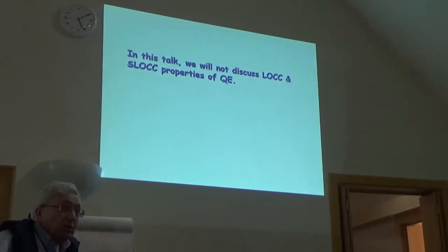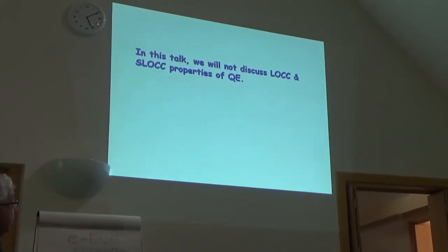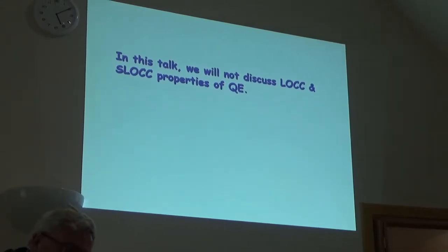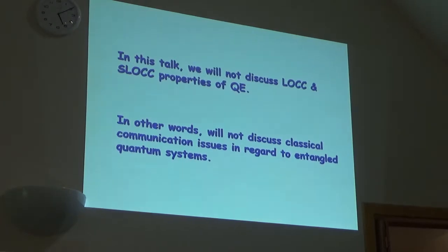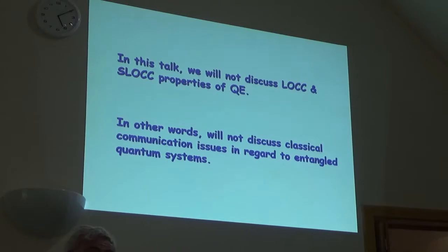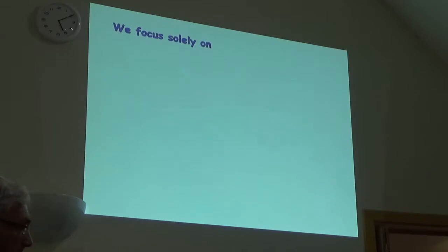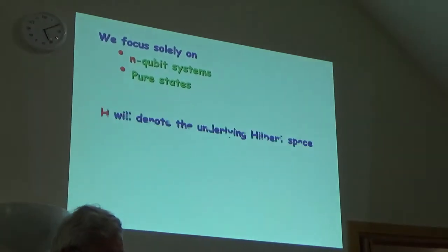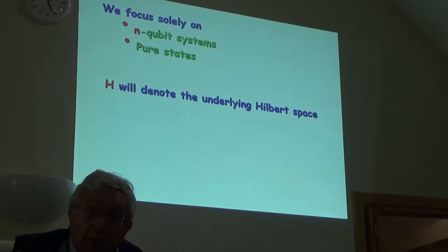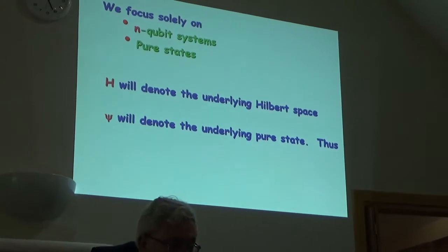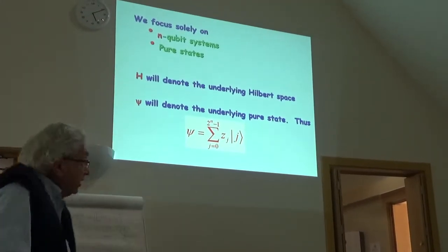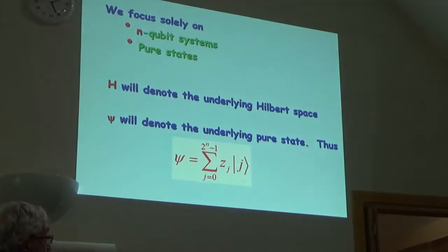So, in this talk, we will not be talking about LOCC, Local Operations with Classical Communication, or SLOCC, Stochastic Local Operations with Classical Communication. In other words, we will not discuss classical communication issues in regard to entangled quantum systems. That's a separate talk. We focus solely on n-cubit systems. We want to focus on the essential ideas and on pure states. H will denote the underlying Hilbert space of our n-cubit quantum system. And psi will denote the underlying pure state, which can be written as a linear combination of standard basis vectors. The z sub j's are complex amplitudes.